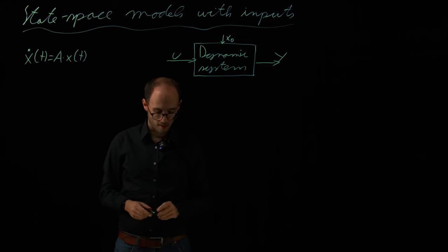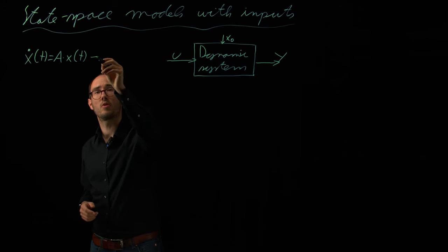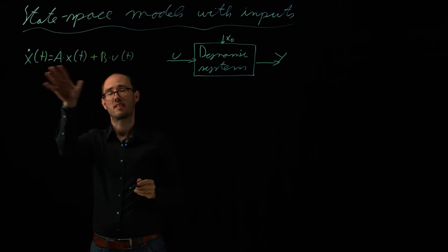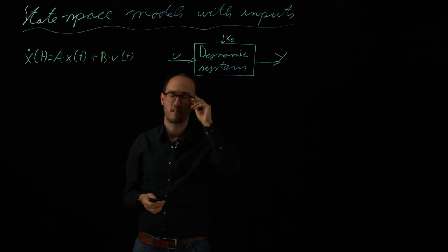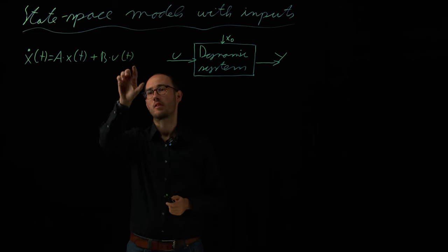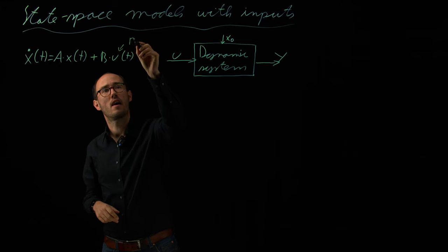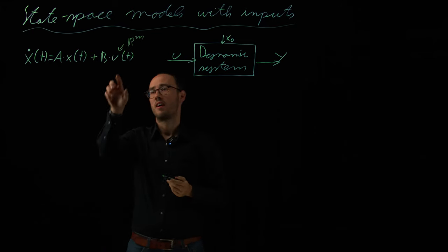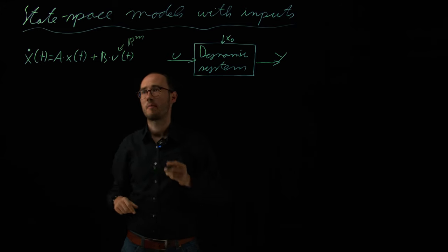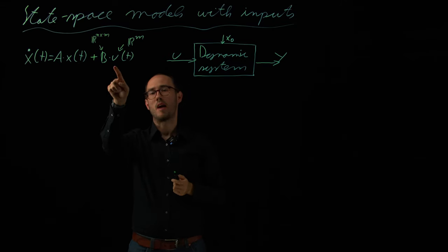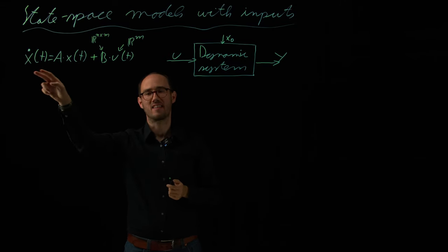And what we will add to this equation are a couple of more terms, which is plus b times u of t in the linear case. So, we will first consider the linear case and then the nonlinear case. So, that basically means that we have some inputs u of t that could be 1 up to m different inputs. So, r to the power of m, and they will be linearly mapped towards the state dynamics via this input matrix B, which is a matrix of n times m, which will basically map the inputs, the m inputs to the n state dynamics.